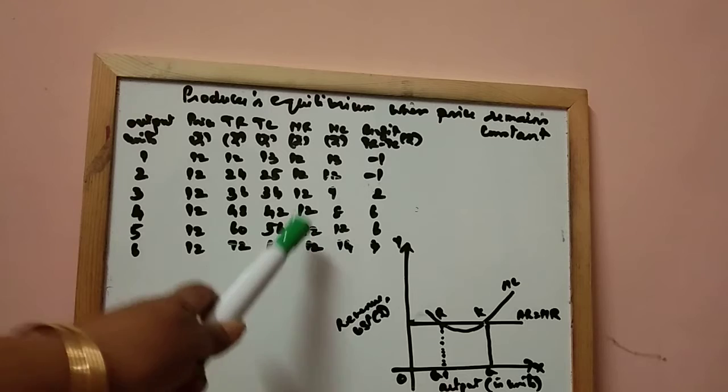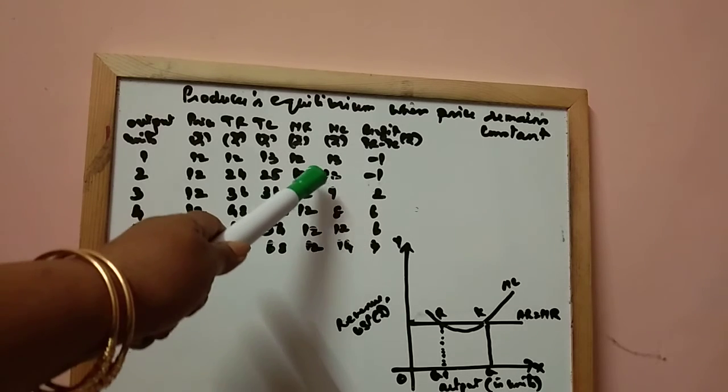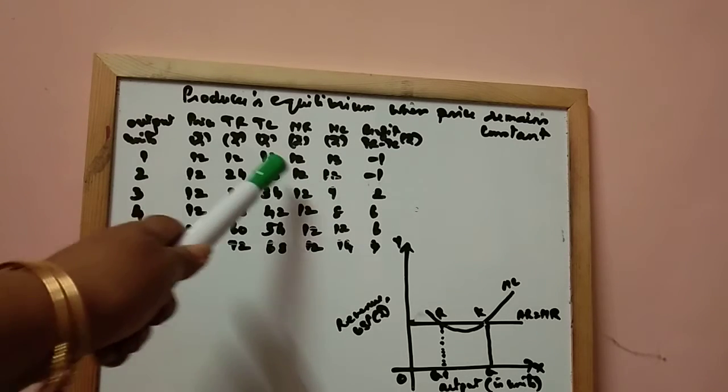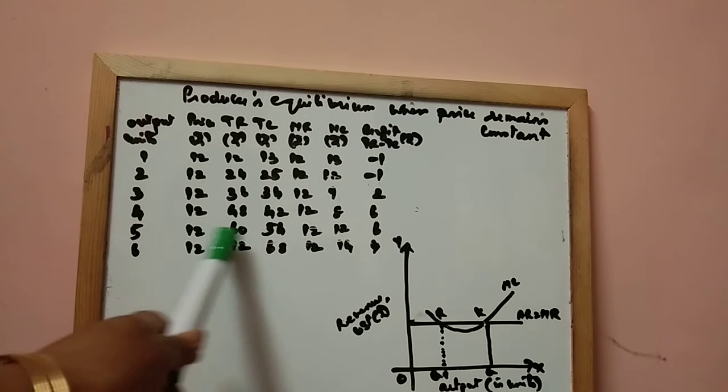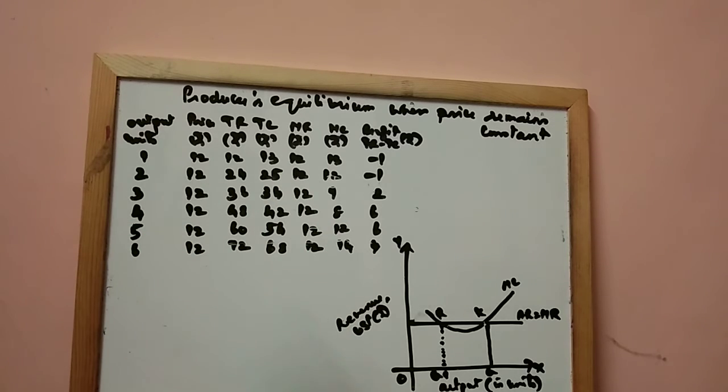So both are equilibrium. But this is the first condition MC is equal to MR. But it continues the production till fifth level of unit where MC and MR equals. But here, we have to look at the second condition.